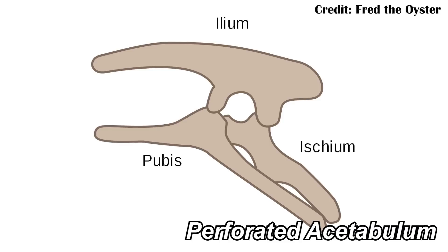And by extension, they're dinosaurs. They have dinosaur-type traits. Some of these include things like a perforated acetabulum — meaning where the hip connects to the femur, there's a hole that goes all the way through the hip bone there.